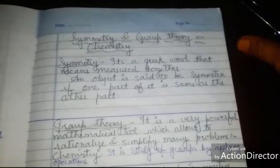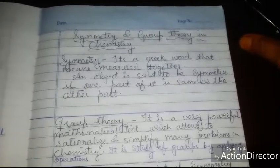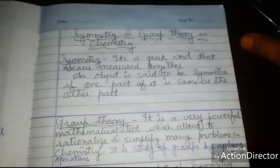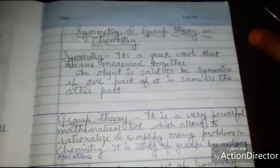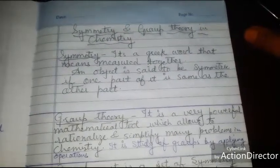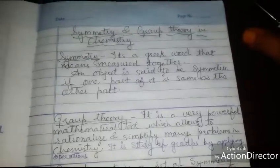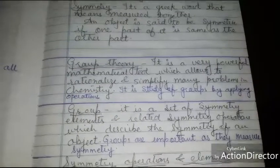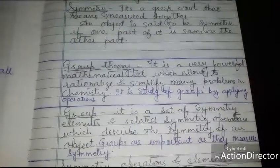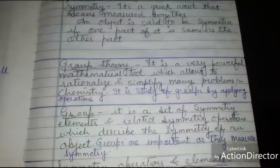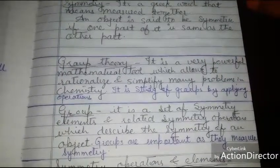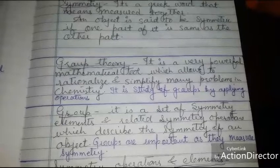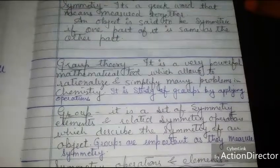Group theory is a mathematical tool which is used for describing all the symmetry aspects of a molecule. So if you want to study symmetry you have to study group theory. A group is a set of symmetry elements and its related symmetry operations which describe the symmetry of an object, and groups are very important as they measure the symmetry.